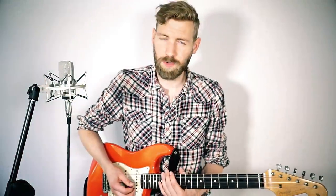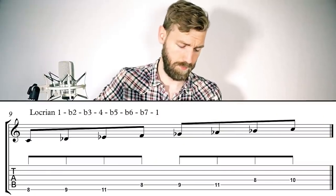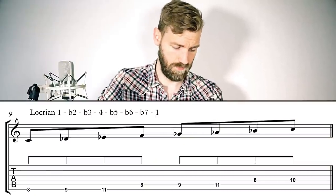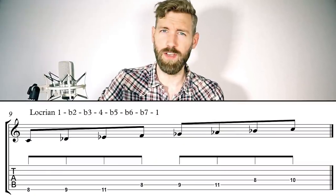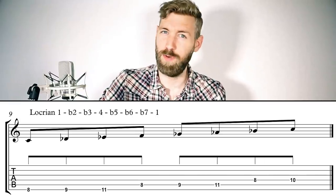The 7th mode is Locrian. With every note flattened except for the 4th, it's difficult to write an appealing riff in this mode. So Locrian is probably the least used of the seven modes. I didn't know too many songs in Locrian, so I'm very happy that The Strokes wrote the song 'Juice Box.' Here it is.